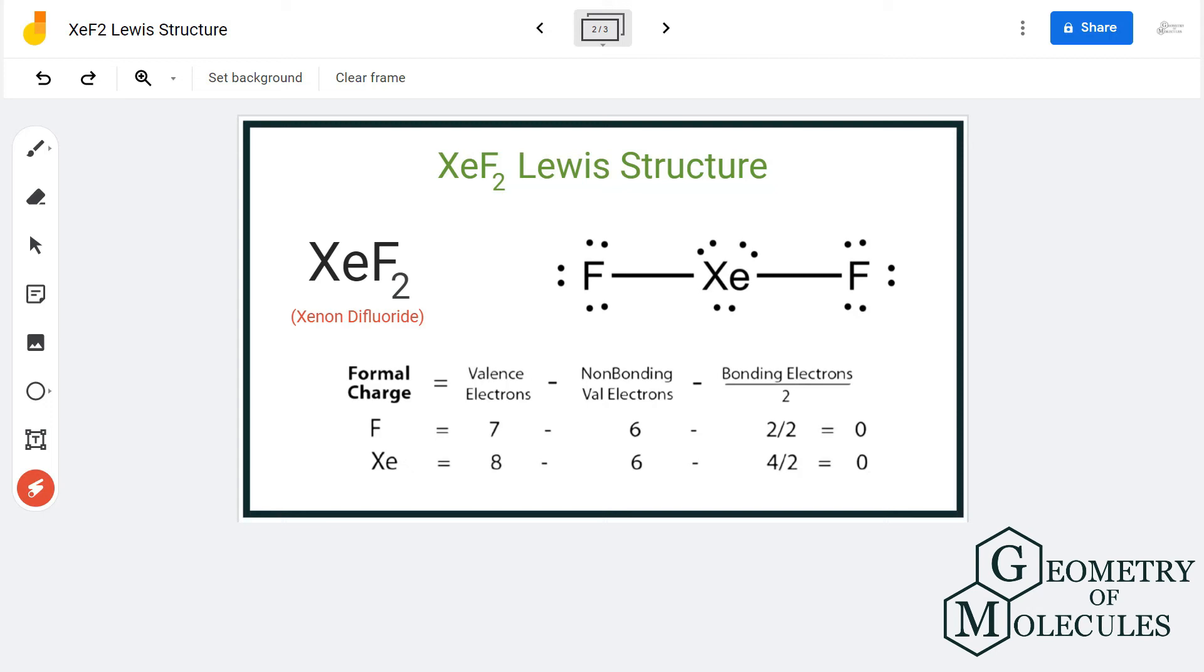Fluorine has 7 valence electrons, there are 6 non-bonding pairs of electrons, and there are 2 bonding pairs of electrons. So here the formal charges for fluorine atoms is zero.